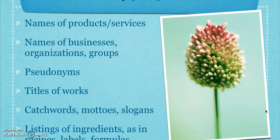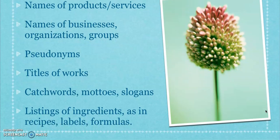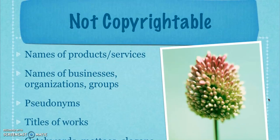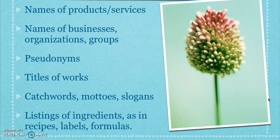If you were to publish under a different name than your own legal name, that would be a pseudonym, and a pseudonym cannot be copyrighted. Titles of works are also not copyrightable — if you wanted to protect the title of your work and make sure nobody else could use it, you would have to use a trademark. Catchwords, mottos, and slogans are all trademarks as well.